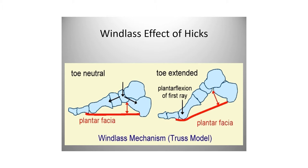Moving through gait comes down to something called the windlass effect of Hicks. It's important to understand the way it works because this is how we are efficient when we stand and move. This is an illustration of the foot in a neutral position — the heel bone or calcaneus in the back, the front of the foot ahead. On the bottom is the plantar fascia. We've heard of it because some people get plantar fasciitis, but the importance of the plantar fascia is more about our ability to generate force than to hold us up.